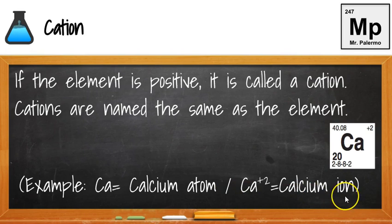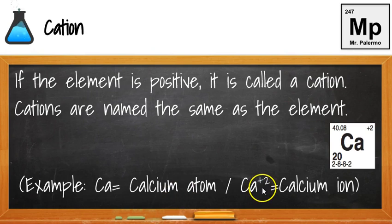How do I know the difference between an atom and an ion in the formula? The formula Ca has no charge associated with it, so that's the atom. And then Ca plus 2 — that's an ion, so that's the calcium ion.